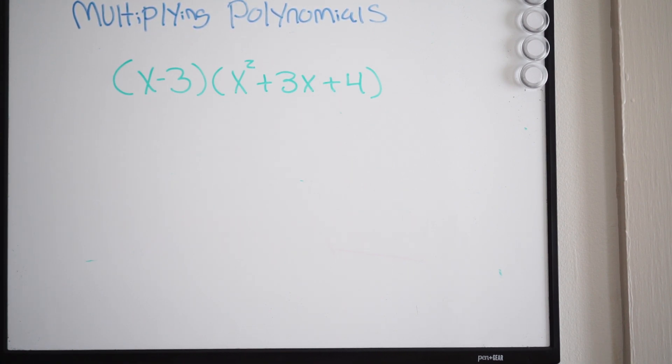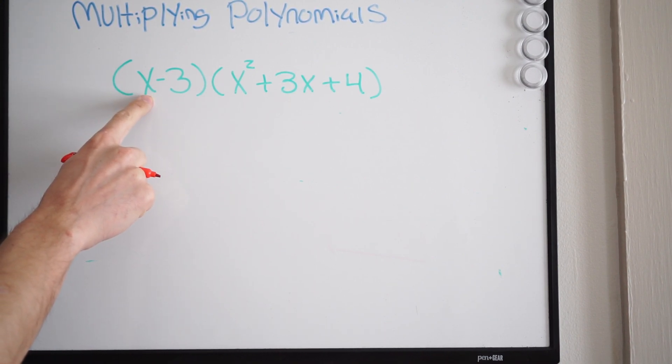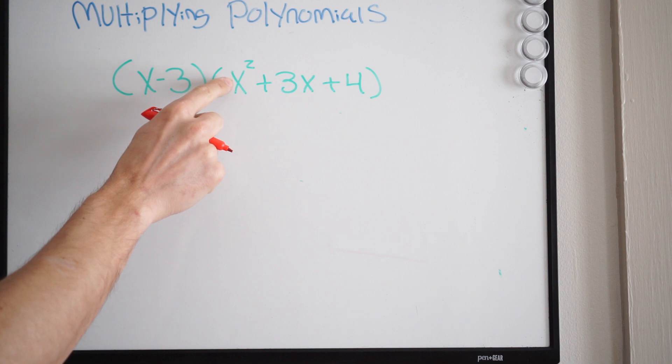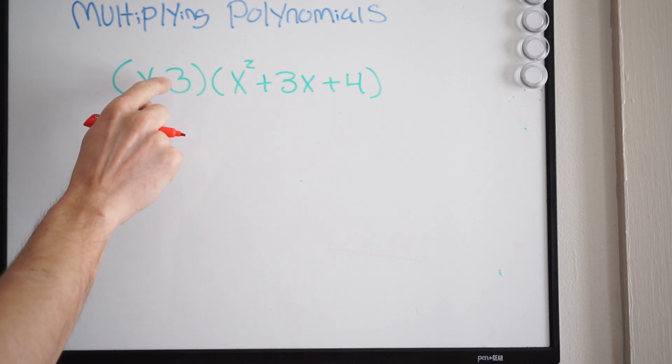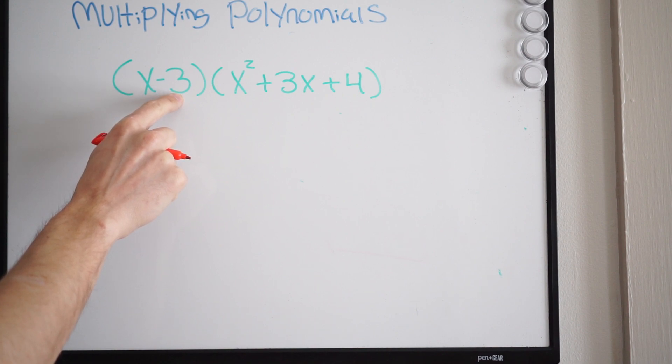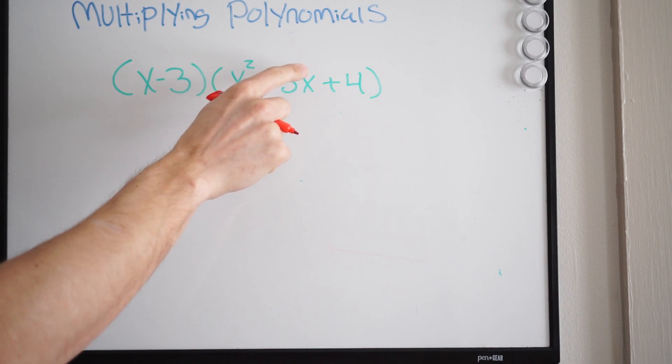All right, so let's get into this problem. They want us to multiply here. Well, the easiest way to do this is to multiply horizontally. So I'm going to start with my first term here and I'm simply going to distribute it to each term inside, and then I'll move on to my next term and do the same thing, multiply each term inside.